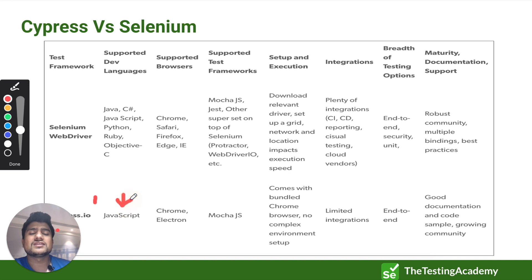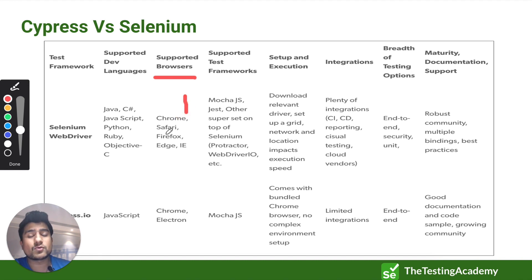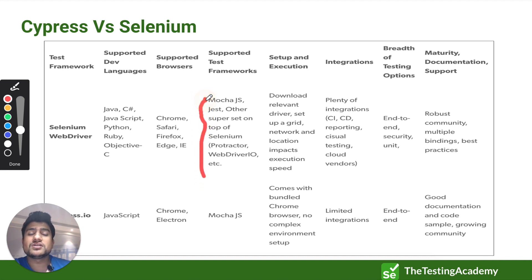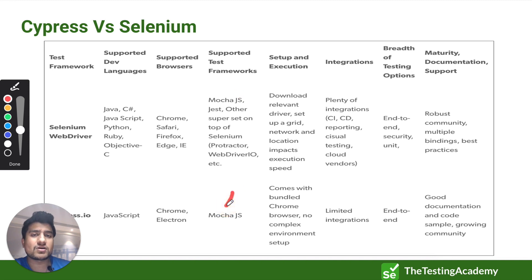For browser support, Selenium supports multiple browsers like Chrome, Safari, Firefox, IE, Edge, and Opera. Cypress currently only supports Chrome and Electron apps. For test frameworks, Selenium supports most of the frameworks available for different languages, whereas Cypress only supports Mocha.